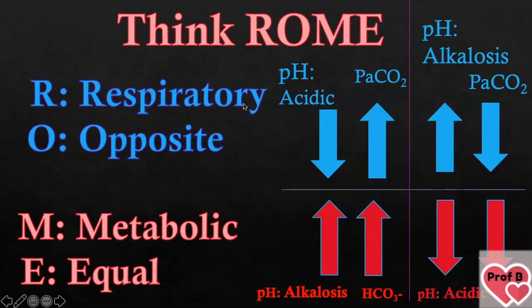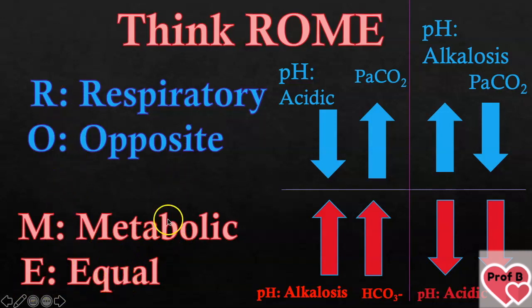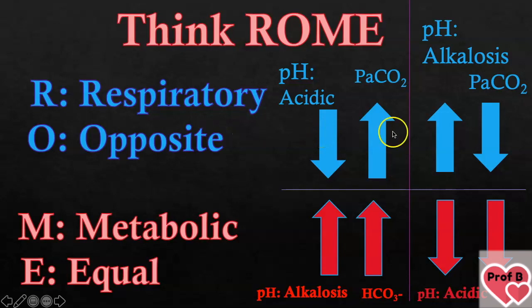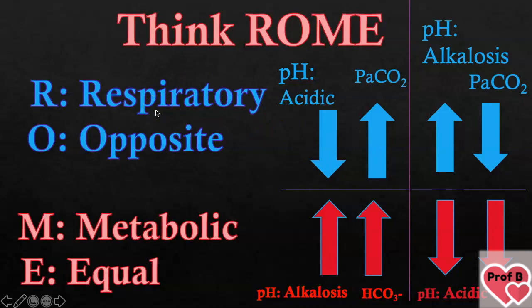Think ROME. R-O-M-E is your mnemonic: Respiratory will be Opposite, Metabolic will be Equal. When your pH is decreasing and your CO2 is increasing, it's going to be respiratory acidosis. If your pH is high and your CO2 is low, the arrows are going in opposite directions — that's still respiratory. The takeaway: in respiratory acidosis or alkalosis, the arrows face in the opposite direction.